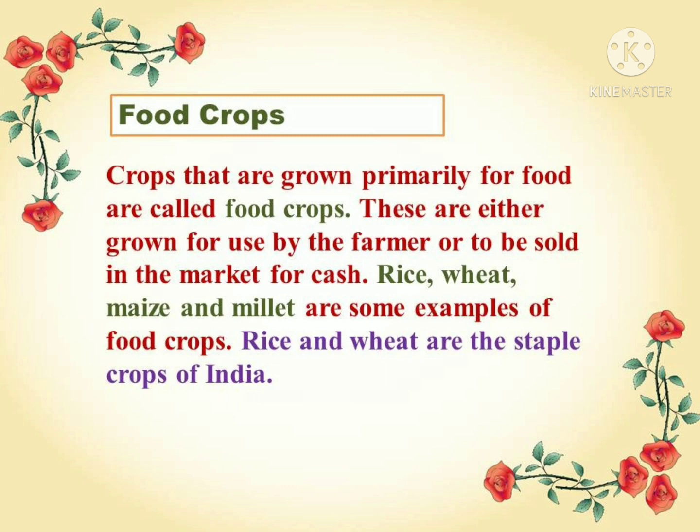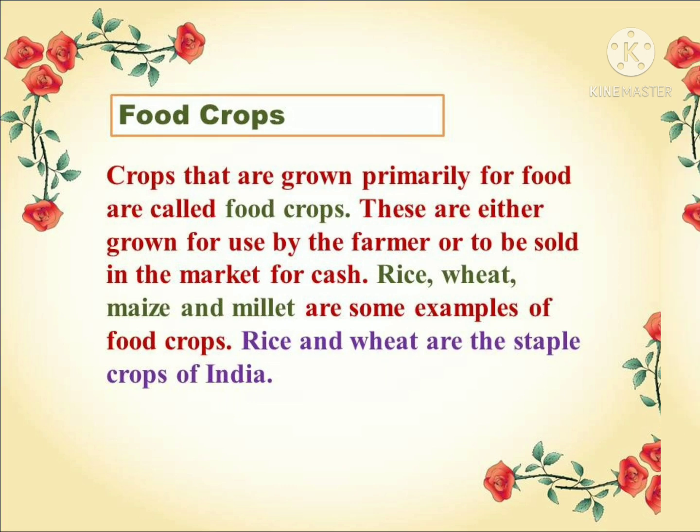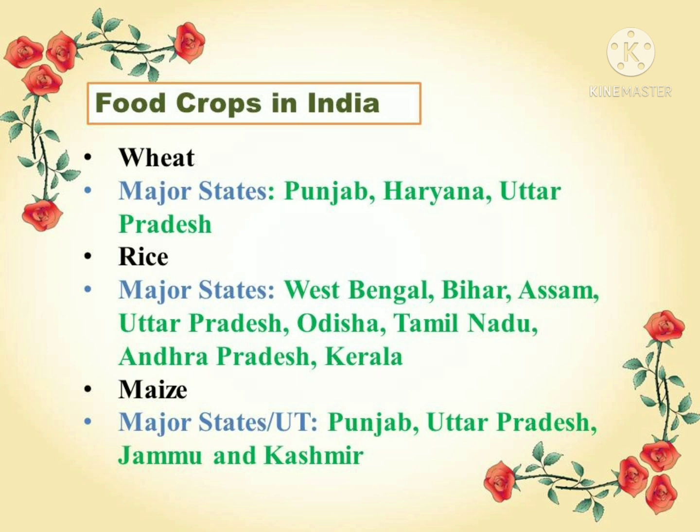Rice and wheat are the staple crops of India. Staple means it is an important product, especially a food that people eat or use regularly. So wheat and rice are the most important foods we eat regularly at our homes. Let us now see where different food crops are grown in India — we will be talking about wheat, rice, and maize.